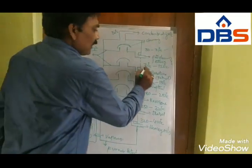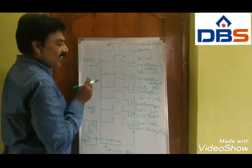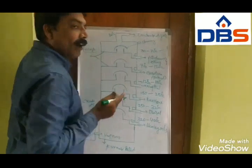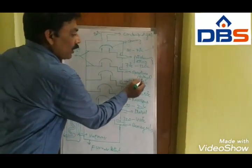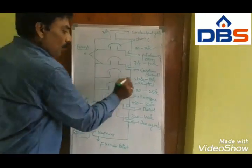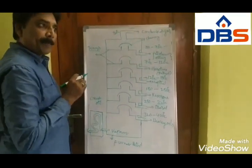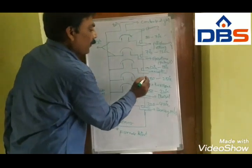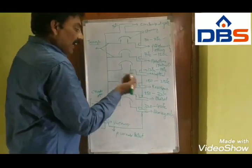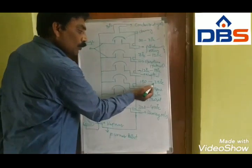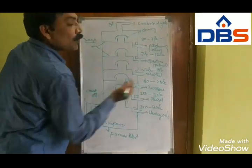From 70 to 120 degrees centigrade, gasoline or petrol is released. From 120 to 180 degrees centigrade, naphtha oil is released. From 180 to 250 degrees centigrade, kerosene is released.